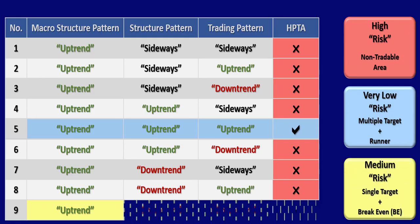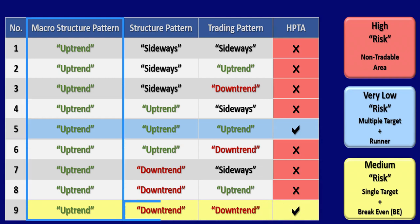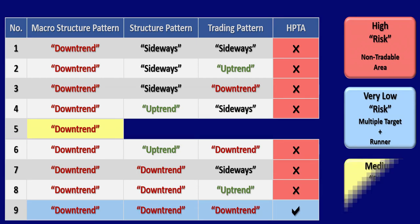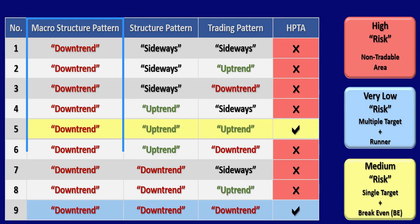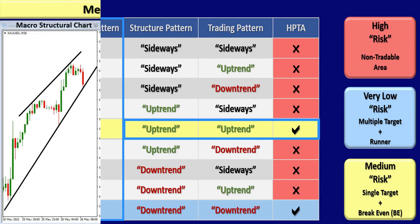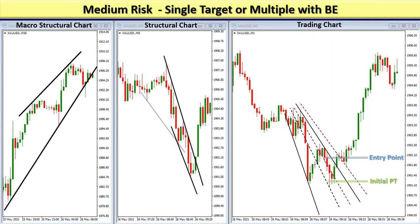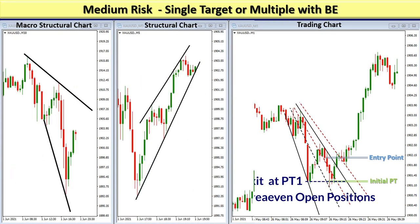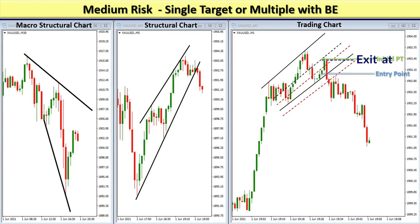Under the medium risk category, the macro structure chart shows an uptrend pattern but the structural and trading charts show downtrend patterns. The potential to reach profit is limited and you should adapt to an exit strategy that allows you to exit most positions at the first target, or break even any open positions at the first target area, with no expectation to catch runners. You may see very limited high probability trading areas and should lower your risk and not add to your open positions, as the market can turn against your direction at any time.